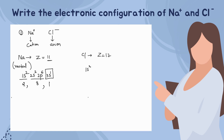Now for the chlorine neutral atom, there are 17 electrons. We again start with 1s², then 2s² and 2p⁶ — that accounts for 10 electrons. We are left with seven more electrons, so we fill 3s with 2 electrons.